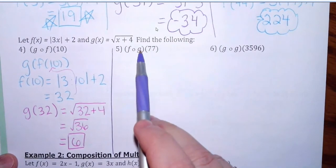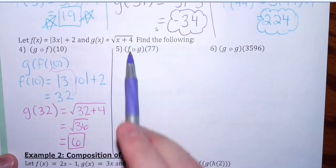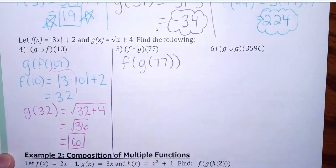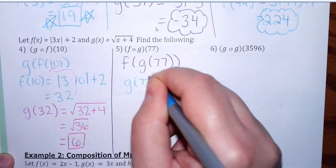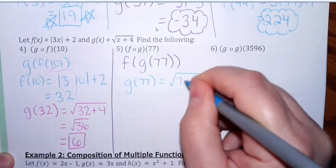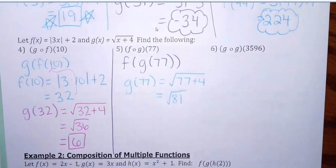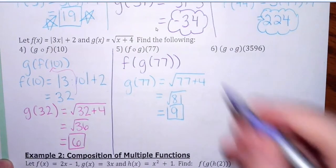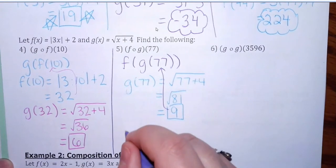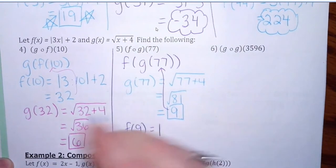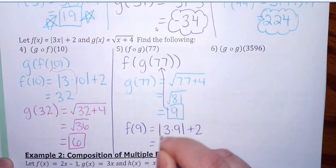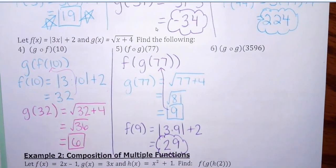Whatever's closer goes first — the 77, I would plug into the g function first. Or with the other notation, it's still the same thing: g of f of 77. First, g with 77 plugged in: 77 plus 4 under a square root. The square root was already there, so don't put a plus or minus — this is just positive 9. Then for the final answer, f of 9 goes into the absolute value: 3 times 9 plus 2 is 27 plus 2, which is 29. That is our answer.